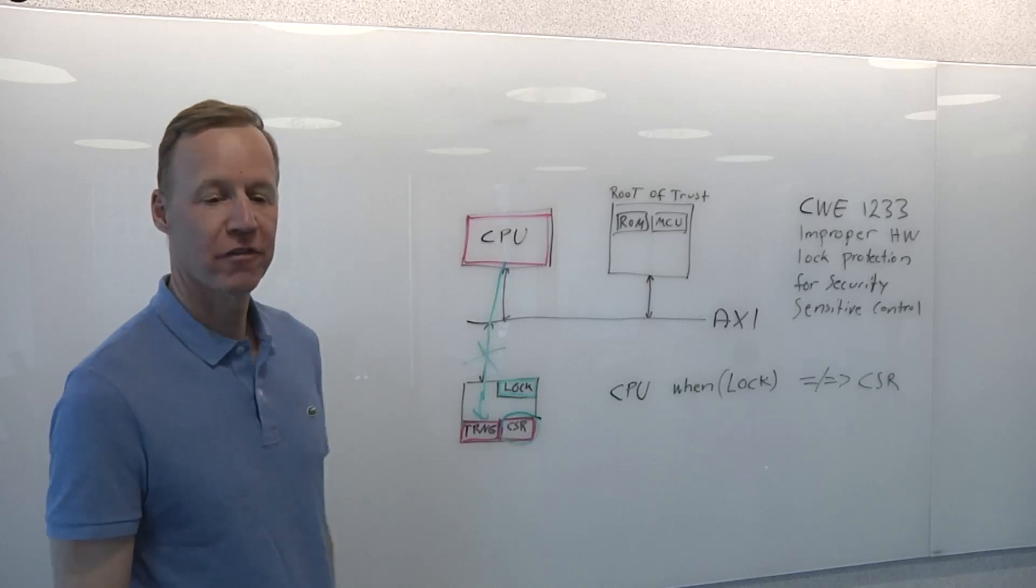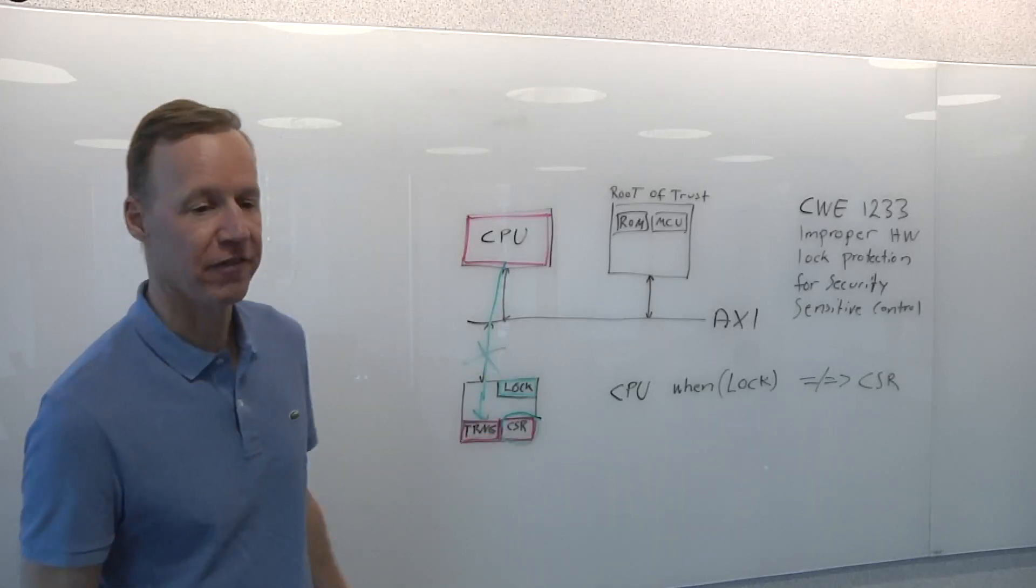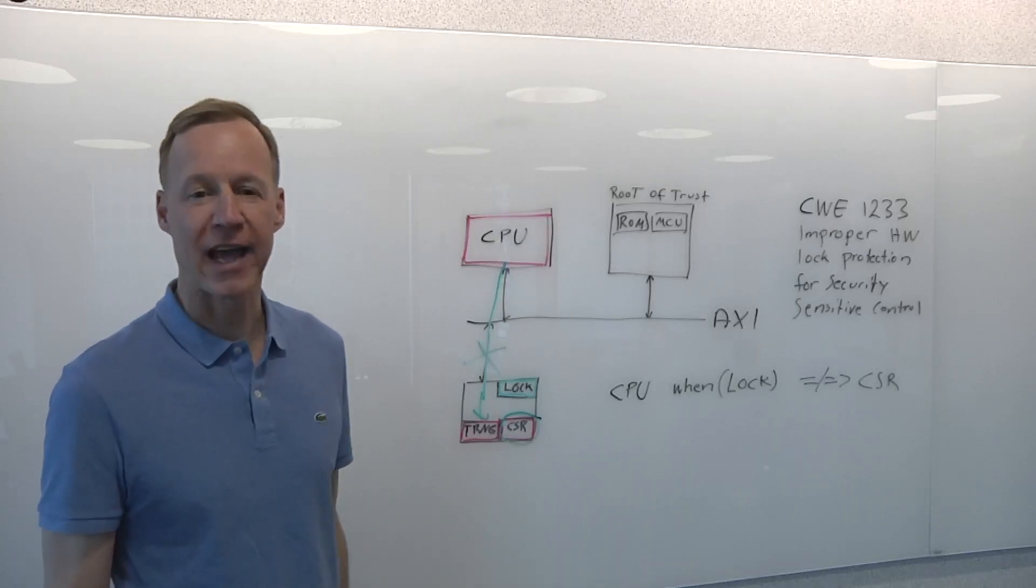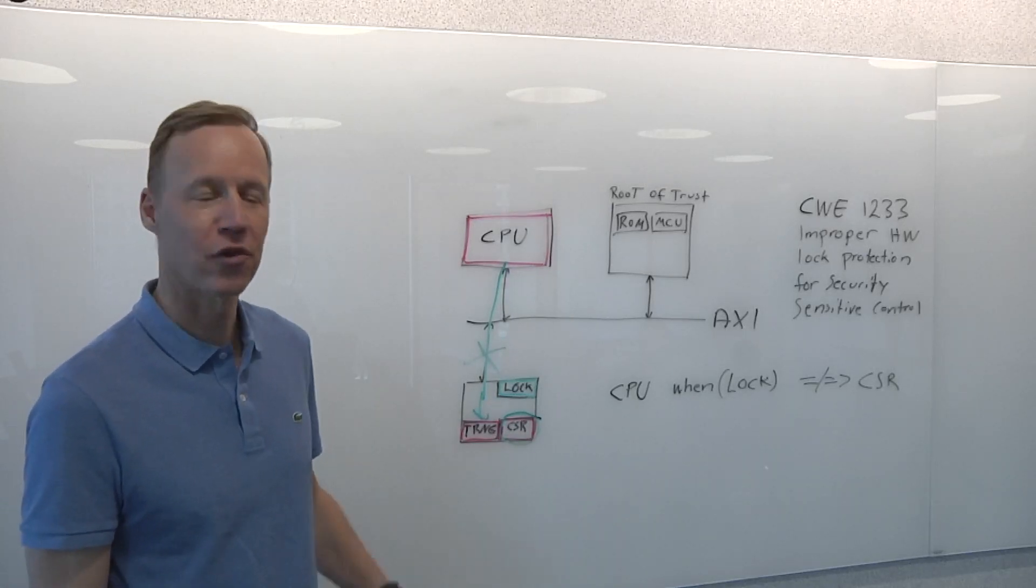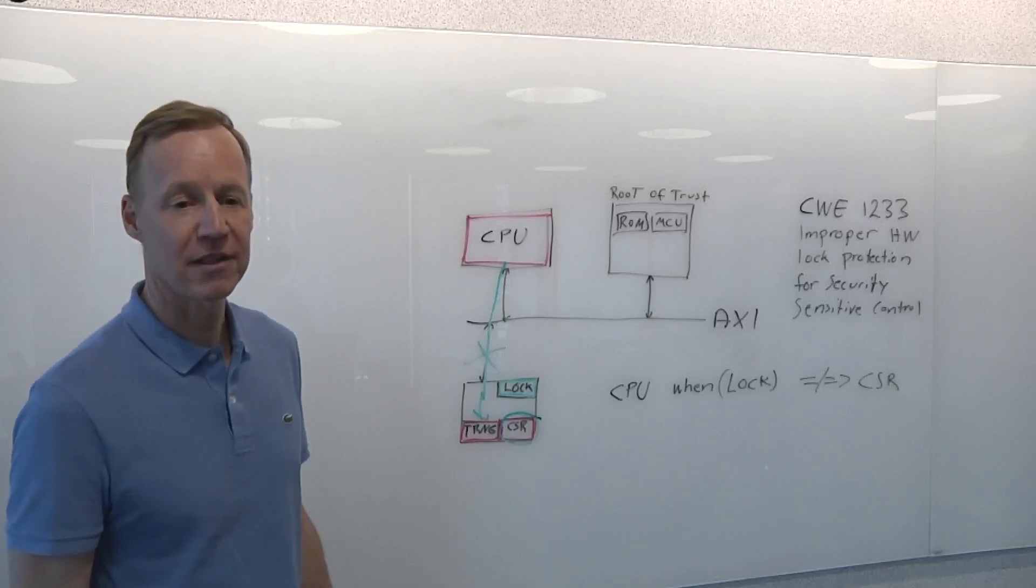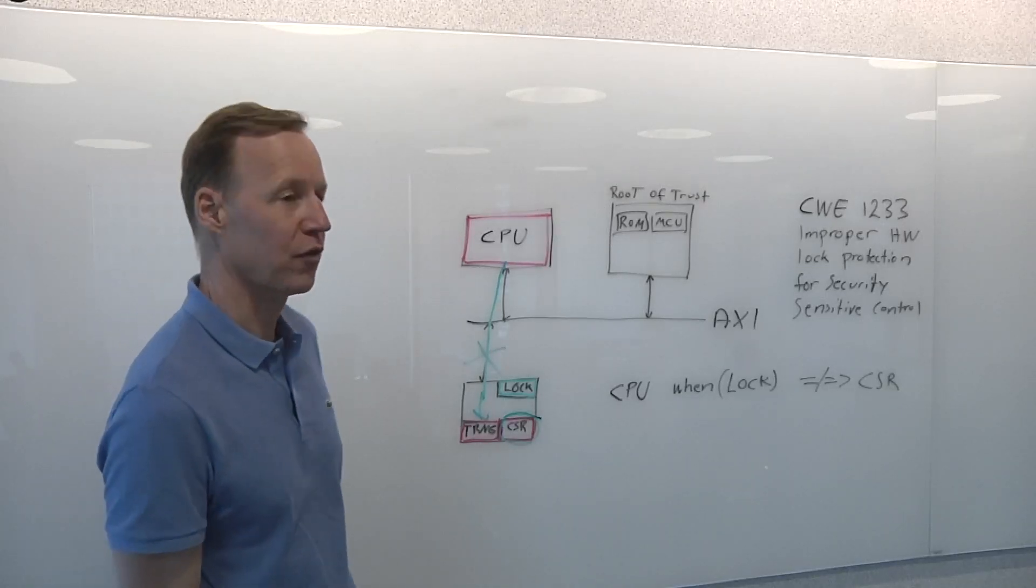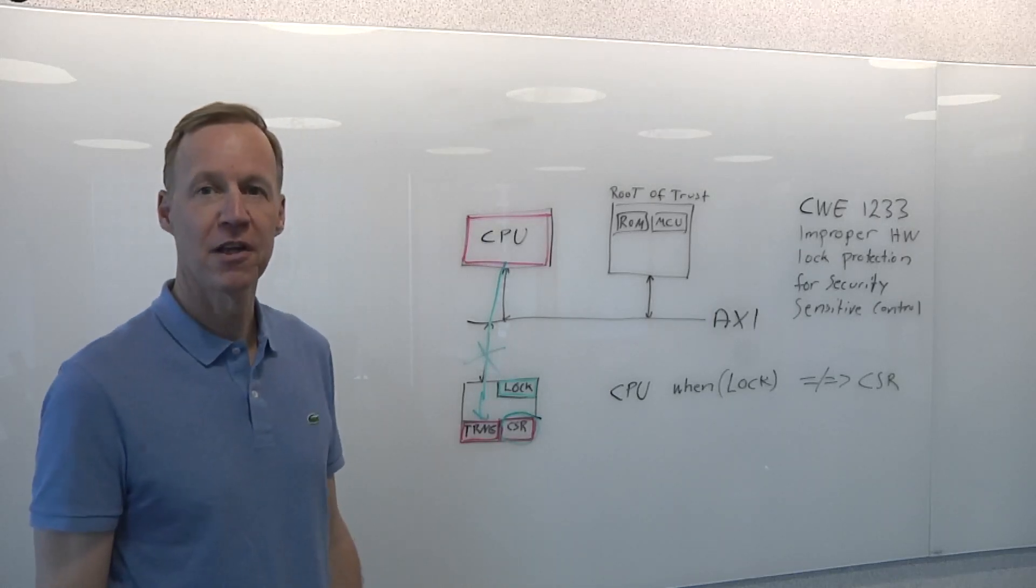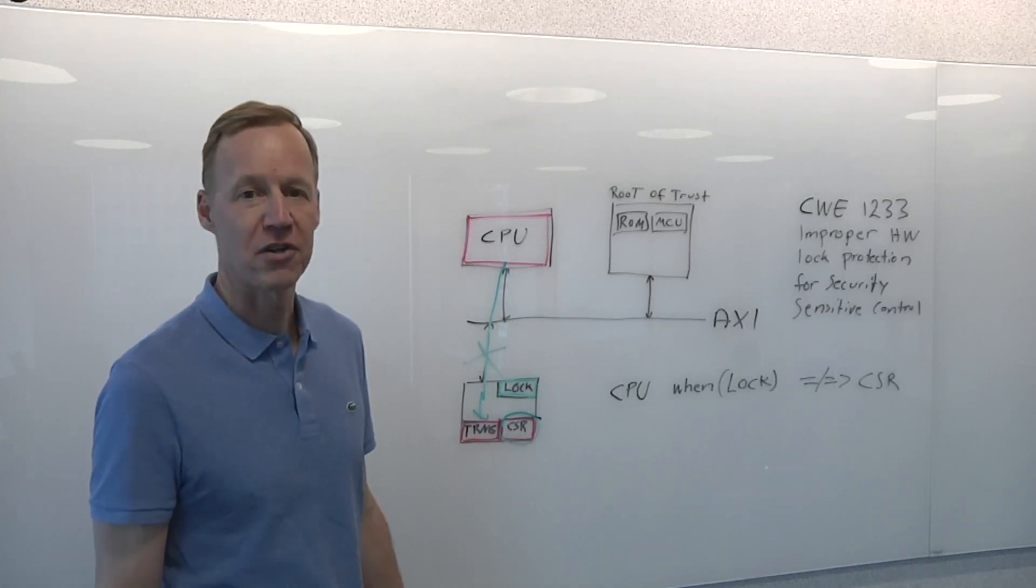So you're going to be doing functional verification of your device, but it's very hard to simulate that and show that something did not happen. You need additional tools to do that. One way of doing that is using Radix rules and then include them in your simulation. And Radix rules express behaviors that are not allowed to happen.